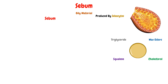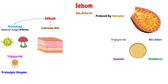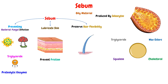This sebum has three main functions. Firstly, it helps in preventing bacterial and fungal infections, because of the triglycerides and the proteolytic enzymes, so it has an antibacterial and antifungal function. The second function is to lubricate the skin, making a thin oily layer on the skin surface that helps prevent friction which can harm the skin. The third and final function is to preserve the flexibility of the hair.